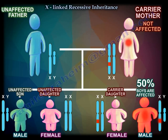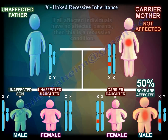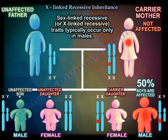If you look at a diagram and all affected individuals have no affected parents, then this is a recessive condition. And if males are affected and no females are affected, so the disease is inherited from two unaffected parents — it is recessive, the male is affected more, and the sons will inherit the problem from their mom — then that is an X-linked recessive.